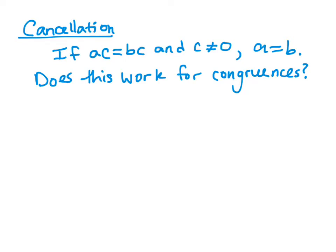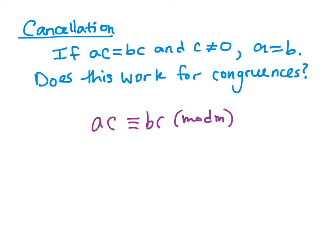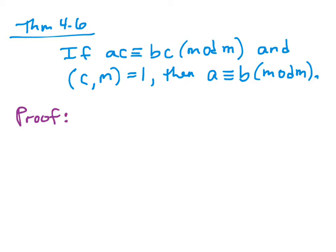Another result from this section is the idea of cancellation with congruences. For equations, if AC equals BC and C is not zero, we can cancel C and get A equals B. Does this work for congruences? We tested some examples and saw that when AC is congruent to BC mod M, sometimes you can cancel C and get a true congruence, but sometimes you cannot. We have a theorem that gives a guarantee for when we can definitely cancel C. This theorem states: if AC is congruent to BC mod M, and the greatest common factor of C and M is 1 — that is, they're relatively prime — then we can cancel C to get A congruent to B.